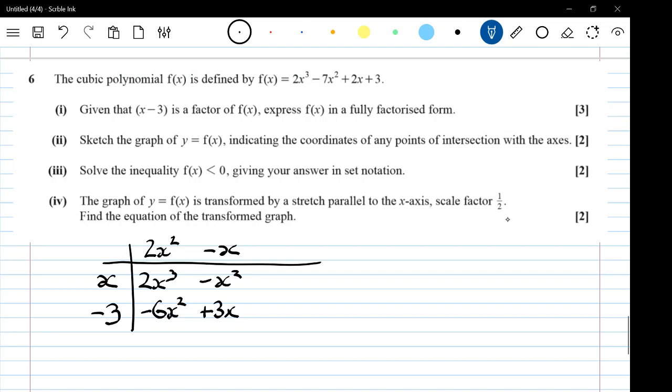I'm supposed to have 2x, so I need to take away an x to get me to 2x. So this must be minus 1, and that does give me plus 3. So I'm happy with that. That gives me that f of x is x minus 3, 2x squared, minus x, minus 1.